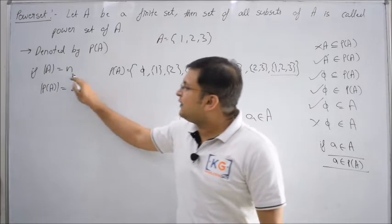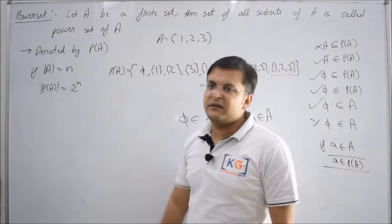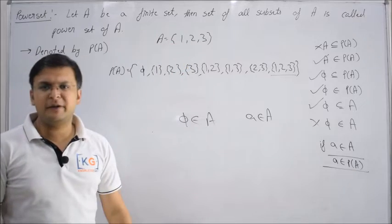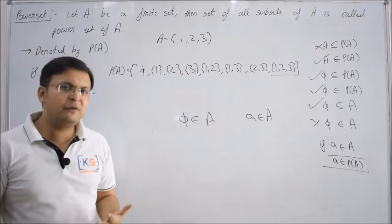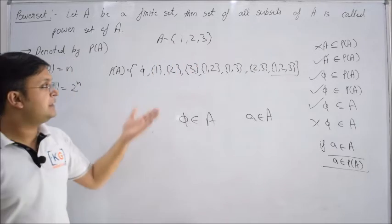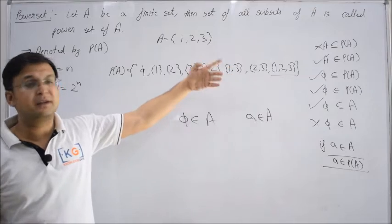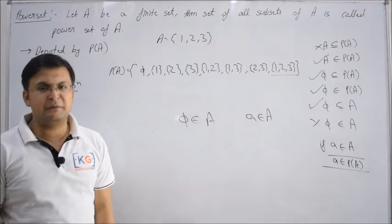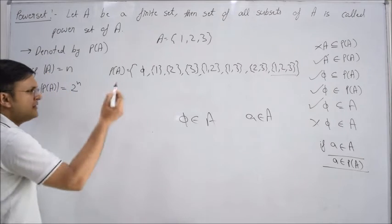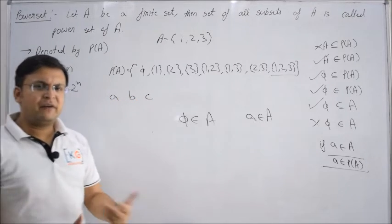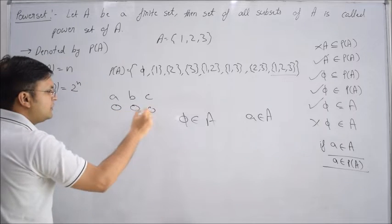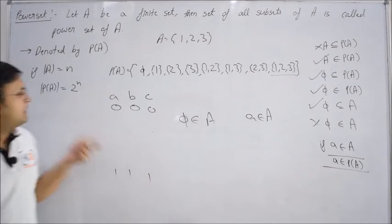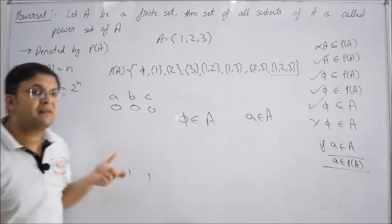One more important point: if set A has N elements, then how many elements will be in the power set? It is 2 raised to power N. For every element, there are only 2 options — either it is in the subset or it is not. So every element has 2 choices: 2 × 2 × 2 gives 8 elements, which is 2^3. Another way to see it: with elements A, B, C, you can go from (0,0,0) to (1,1,1) where 0 means absent and 1 means present. So the cardinality of P(A) = 2^N.